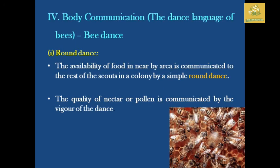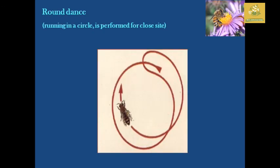That is called body communication. The best example is honeybees, which have a specialized language — the bee dance. There is a round dance, a waggle dance, and a sickle dance. If you have to use the nest of a farm and make the dance, it will be the round dance. The scout bees will show how to find nectar — this is a simple round dance. It has nectar quality and power quality — that is the significance of the dance.